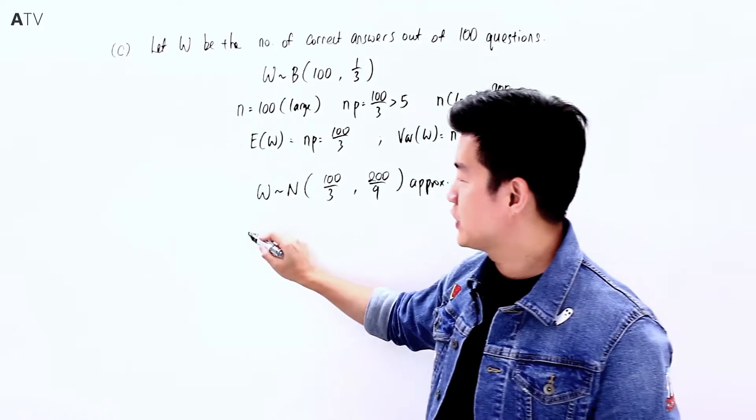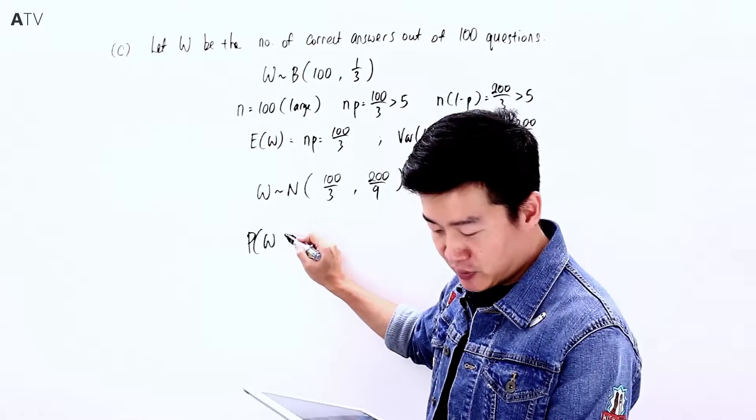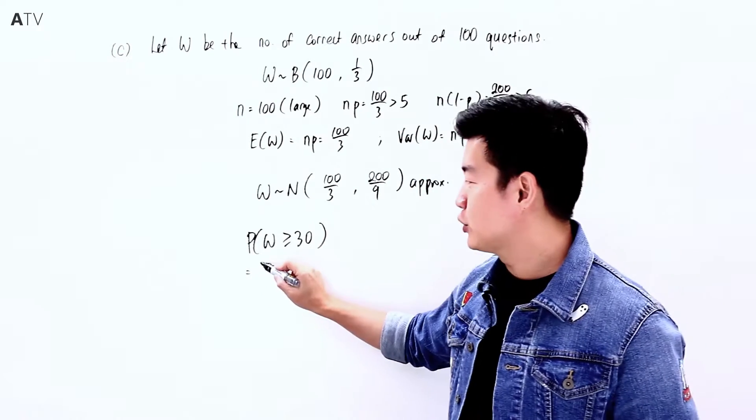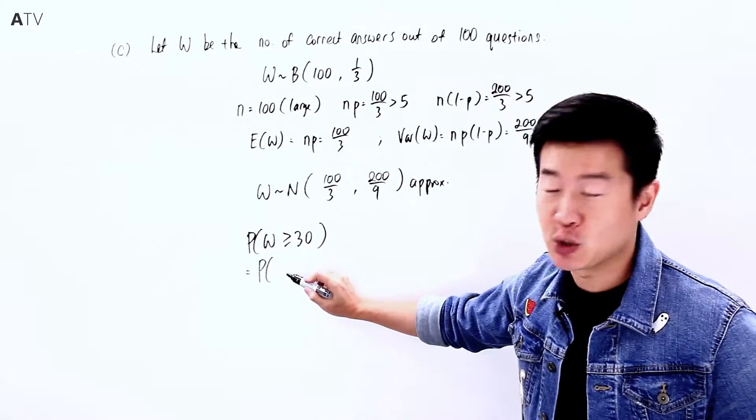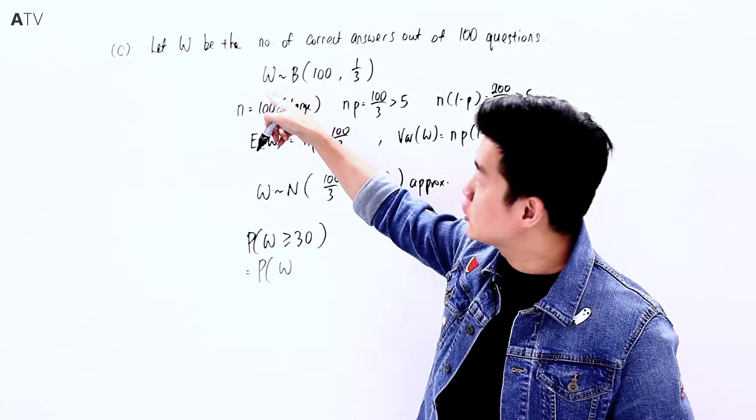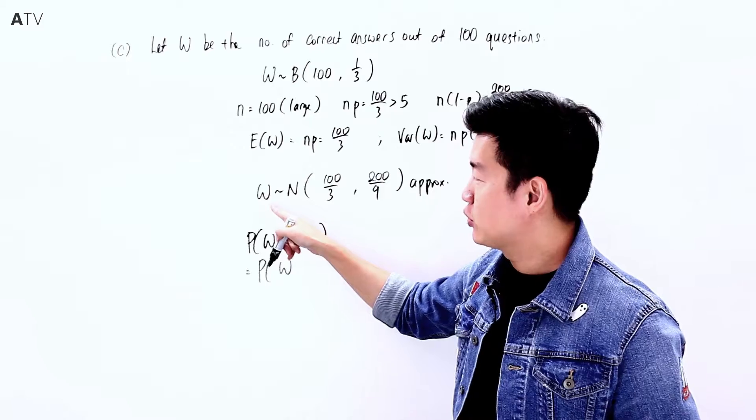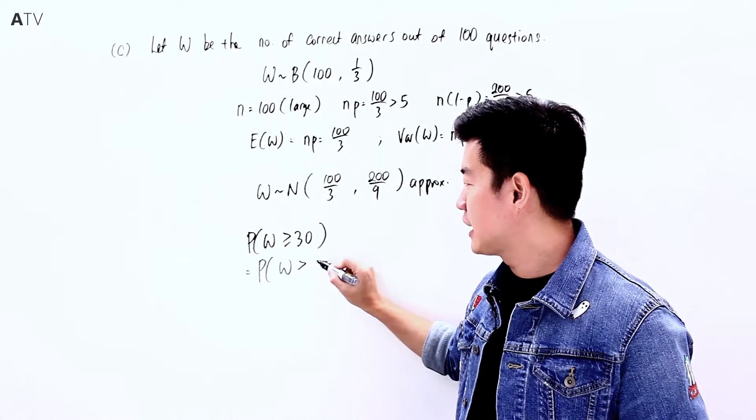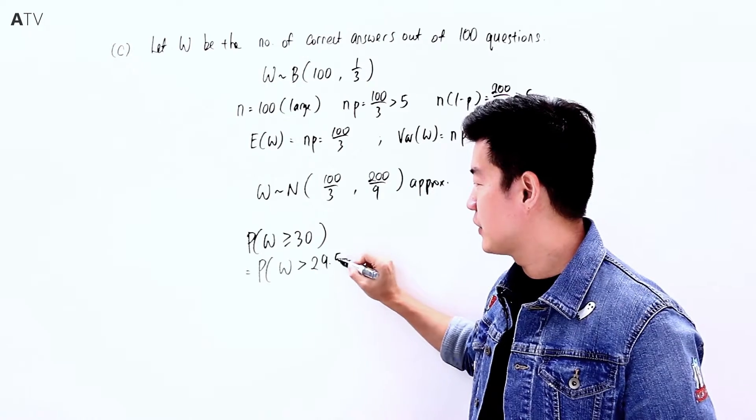We need to calculate P(W ≥ 30). Since W was originally a discrete random variable and we're now treating it as continuous, we apply a continuity correction. So P(W ≥ 30) becomes P(W > 29.5).